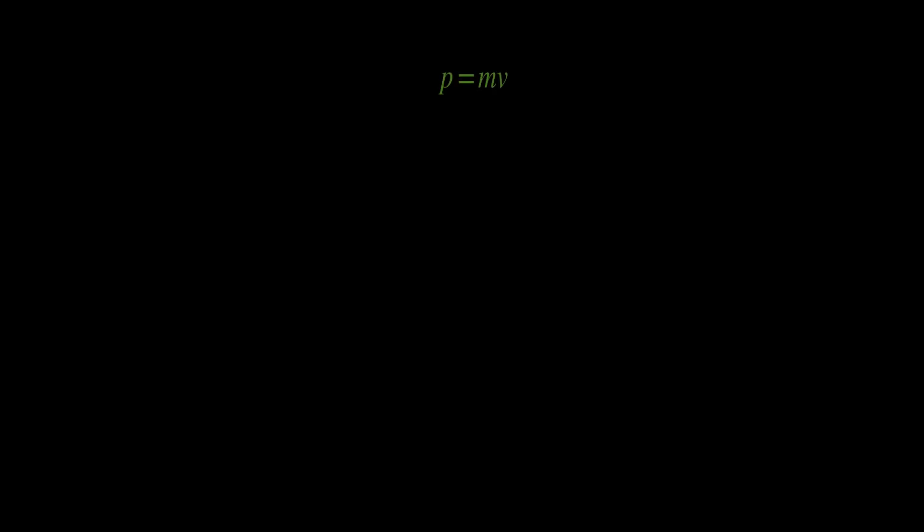Now we want to quantify the motion of a body, specifically something we call the amount of motion, or momentum. The momentum is equal to the mass times the velocity of this body. We can write this as the mass times the derivative of the position with respect to time. And we say that a force is what changes the momentum of a body — a force is how much the amount of motion of a body changes in a certain amount of time, or the derivative of momentum with respect to time equals the force.